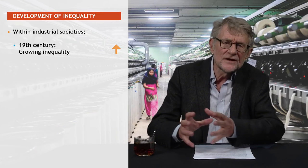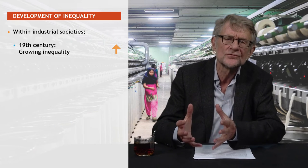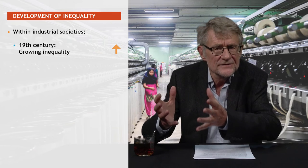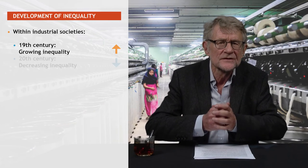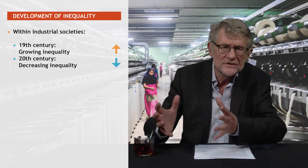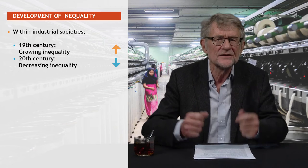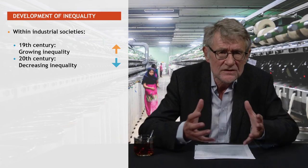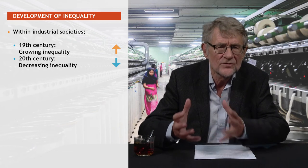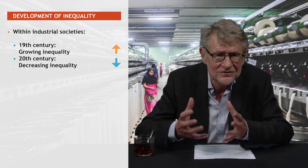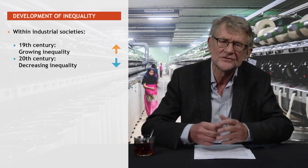In the second half of the 19th century, in the advanced industrializing societies, working conditions began to improve and wages to rise. And in the 20th century, overall income inequality diminished in these societies. It was particularly in the first three decades after the Second World War that these societies combined high economic growth with decreasing class inequalities. The rich countries of the West turned into welfare states and mass consumption societies in which the vast majority of the population lived far above the subsistence level.